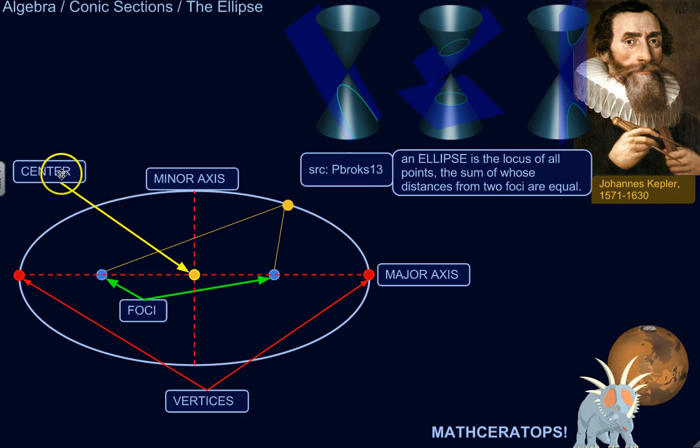Now, the center is the midpoint between the two foci. It is also where the major and minor axes intersect. So the major axis is the longest distance between two points on the ellipse. And the minor axis is the shortest distance between two points on the ellipse. And they intersect at the center of the ellipse.